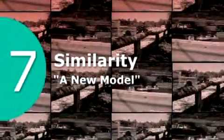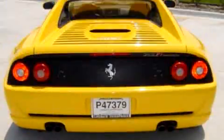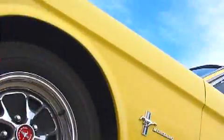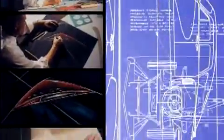Module seven: similarity, a new model. Car design requires more than an eye for flashy paint colors and rims. You'll need to use ratios and proportions to make sure the car you draw on paper is the car you drive off the lot.